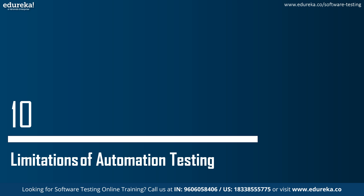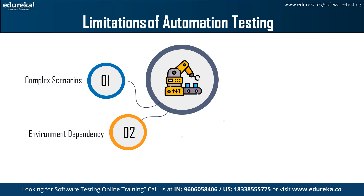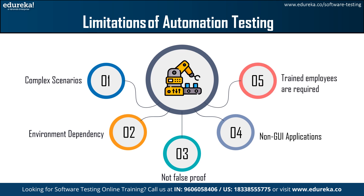We will now discuss the limitations of automation testing. First is complex scenarios — it can be difficult to automate tests for highly complex scenarios, particularly those requiring human-like decision making. Next is environment dependency — because automated tests often depend on a specific test environment, running them in different environments may result in false positives or negatives. Next is that automation is not foolproof — errors in automated tests can result in mistakes and omissions. Next is non-GUI applications — automation is less effective for applications that do not use a graphical user interface and rely on back-end processes. And the last limitation is that trained employees are required — personnel with programming and testing knowledge are needed to conduct automated tests.